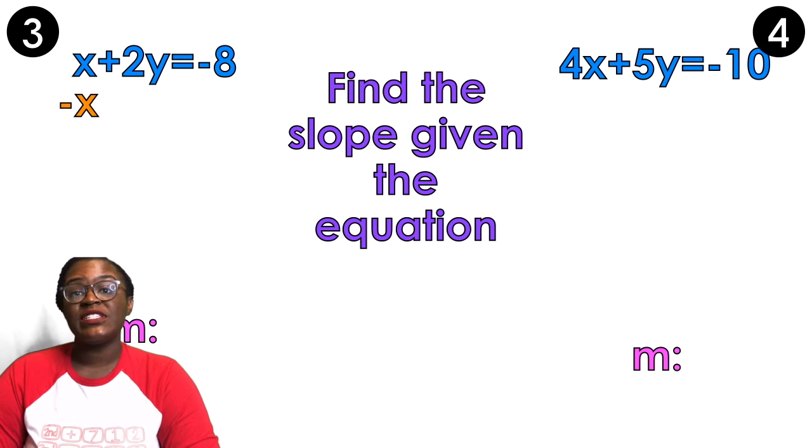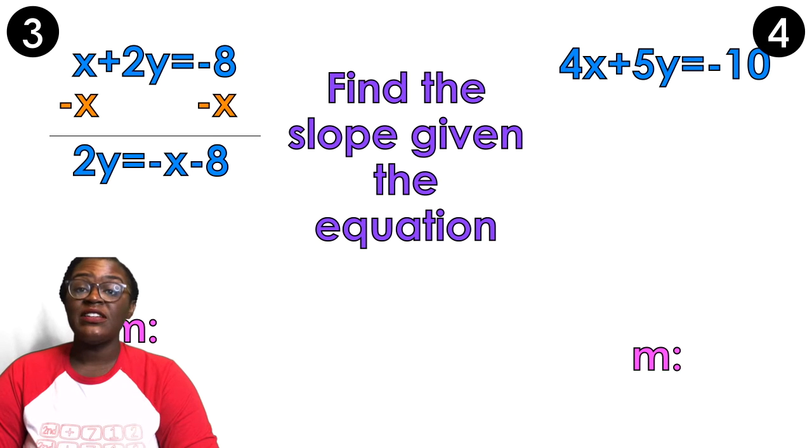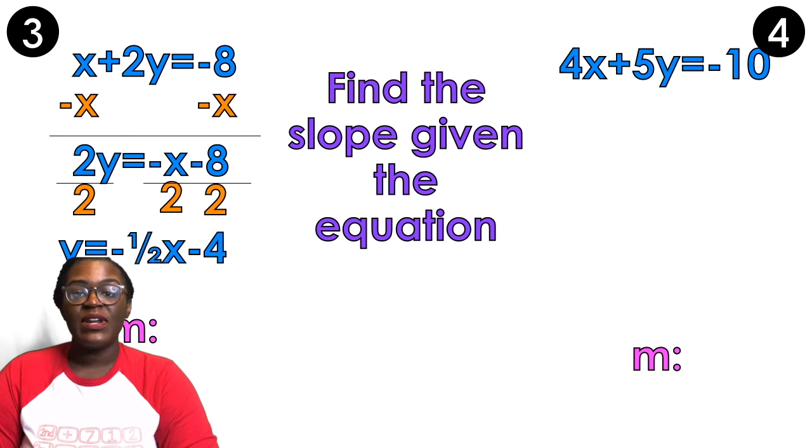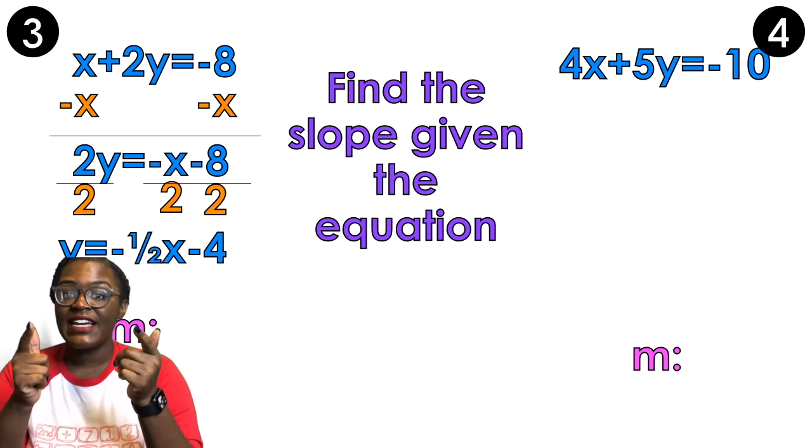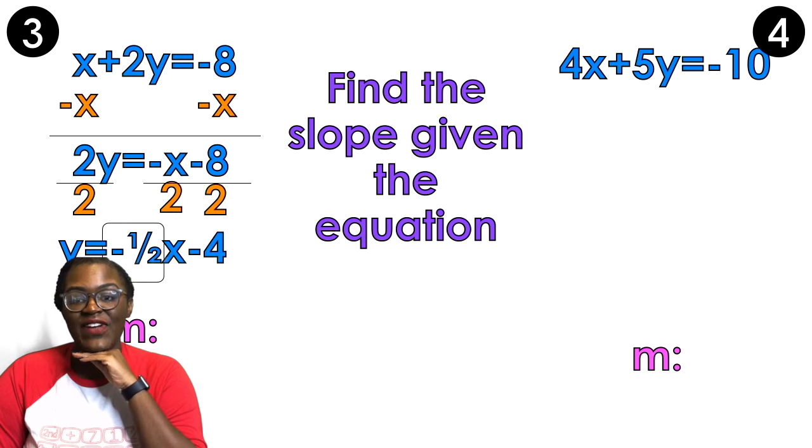So that means I'm gonna isolate Y. So I'm going to subtract X from both sides. Now that I subtracted X from both sides, I'm gonna get 2Y equals negative X minus 8. So I'm gonna divide by 2. And now that I've divided by 2, I'm gonna get Y equals negative 1 half X minus 4. Because there's an imaginary negative 1 in front of the X, so that's how it turned into negative 1 half. And then 8 divided by 2 is 4, and there was a negative in front of that 8, so that's why it's negative 4. So again, now that Y is isolated, the number touching the X, that's gonna be my slope. So that's negative 1 half.